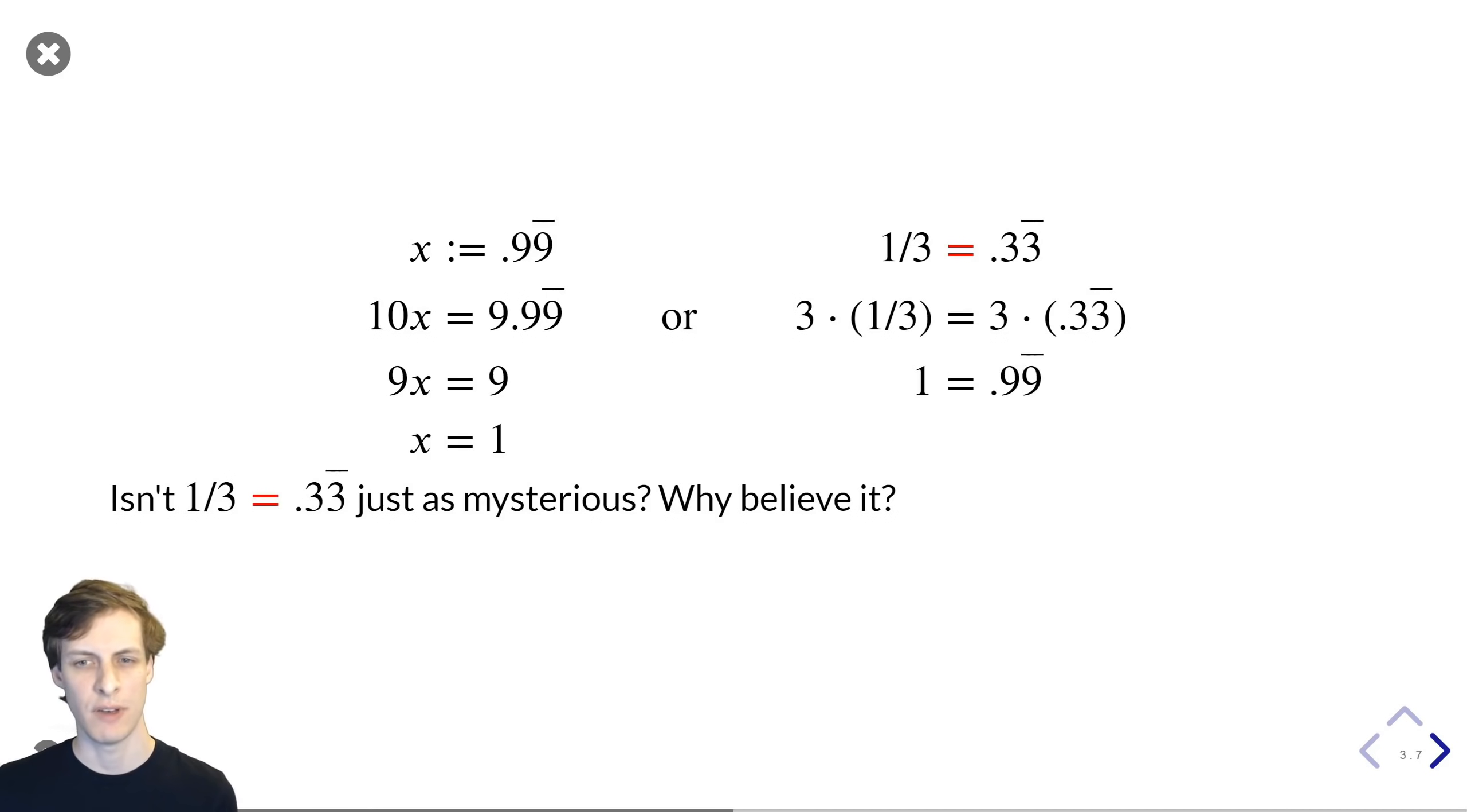And as long as we're on the topic of hiding details in places you don't understand, why are you so okay with 1 third being exactly equal to 0.33 repeating? That sounds kind of just as hard to prove as 0.99 repeating is equal to 1. People seem a lot more okay with that one, but I don't really think you should be.